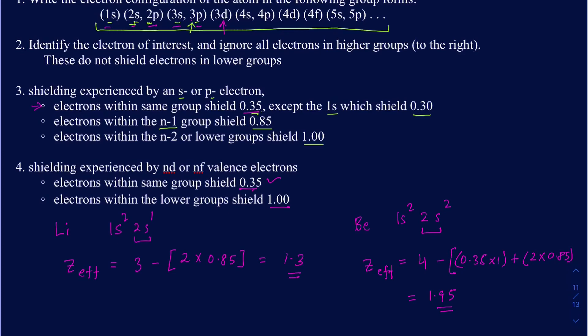You can clearly see that going from lithium to beryllium, the effective nuclear charge increased. So as you go along a period, your effective nuclear charge increases — and this is important when discussing ionization energy, atomic size, and related periodic trends.